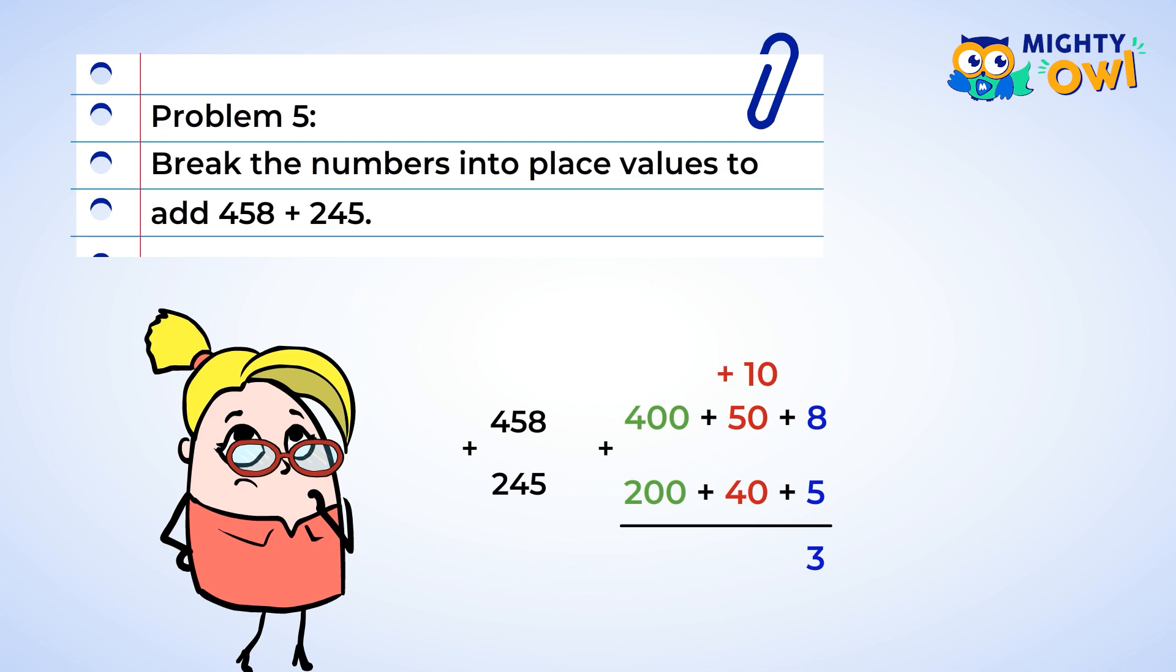So we put the three down in the ones place value, and take that extra ten and add it to our tens place value numbers. Let's add our tens now. Ten plus fifty plus forty. That gives us one hundred. Aha! That one hundred can be placed in the hundreds value. So we put a zero in the tens place to show that there are no tens left, and one hundred plus four hundred plus two hundred is equal to seven hundred.